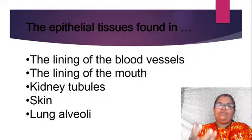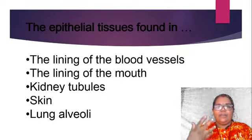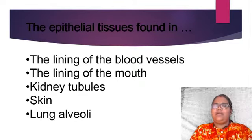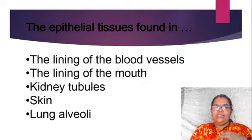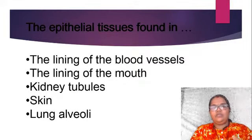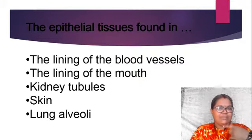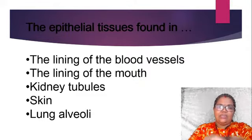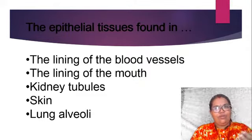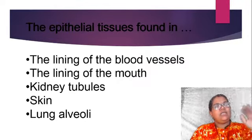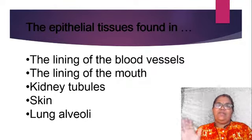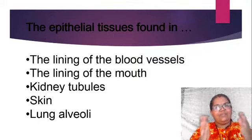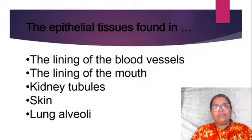So where can you find epithelial tissue, and what is its main function? Epithelial tissue is found in the lining of blood vessels. Wherever there is a lining — the lining of the mouth (that is the buccal cavity), kidney tubules, skin, and lung alveoli, which are very fine in nature — you can see epithelial tissue there. Simply, we can say epithelial tissue is all over our body, mainly covering so many organs and their cavities.